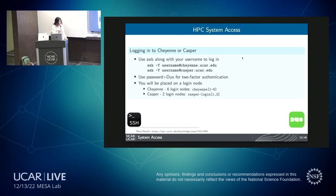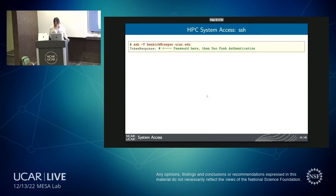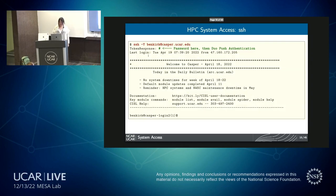Once on the login nodes, you'll be placed on either Cheyenne or Casper, whichever you specify. To log into Casper, just replace 'cheyenne' with 'casper' in the SSH prompt. You'll be placed on one of the six login nodes on Cheyenne, or one of the two login nodes on Casper. The hostnames are cheyenne1 through 6 or casperlogin1 and 2. You can also pass X11 forwarding with the -Y flag.